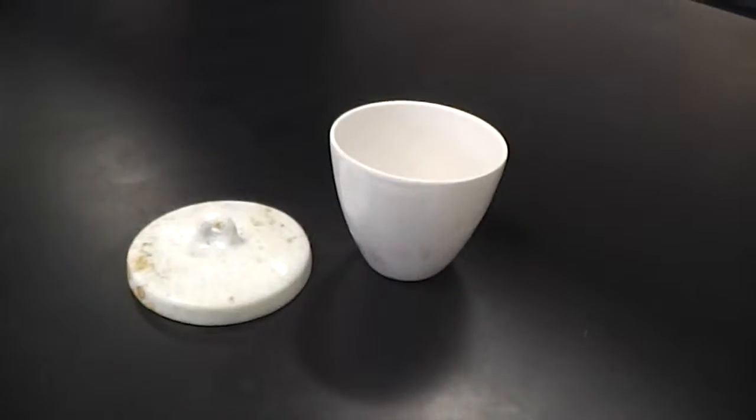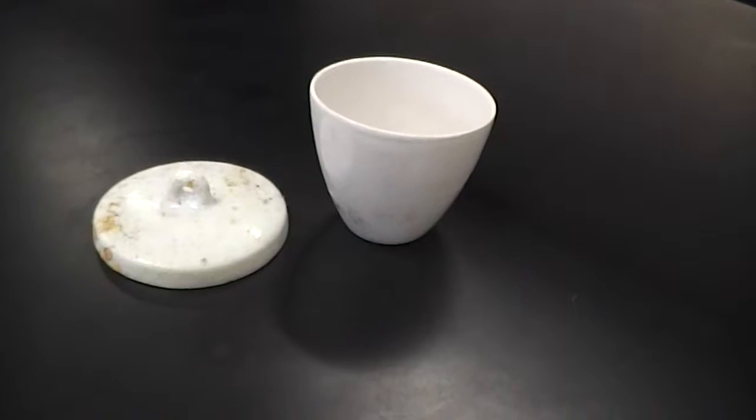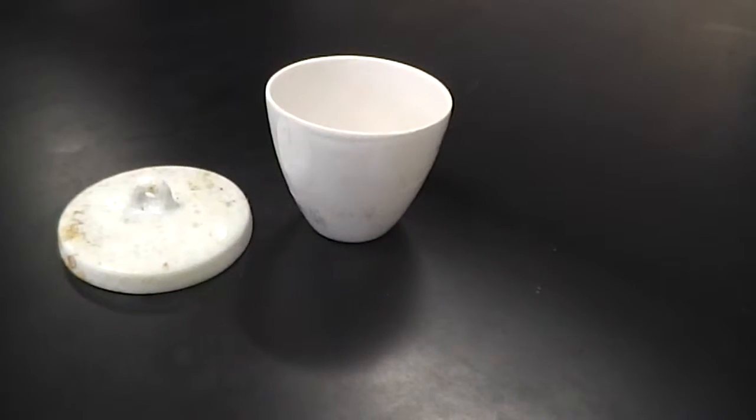A crucible is a small porcelain container with a lid. It is often used for drying excess water out of a chemical or just for heating substances.